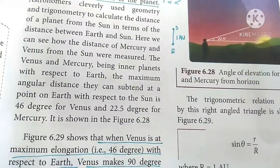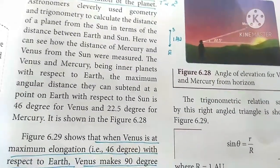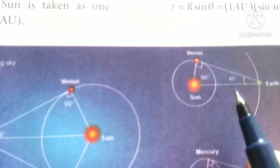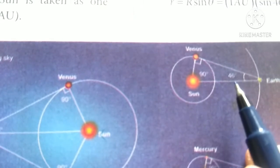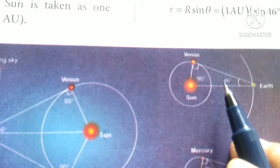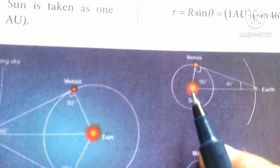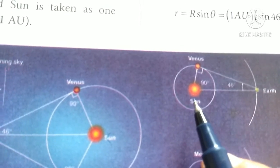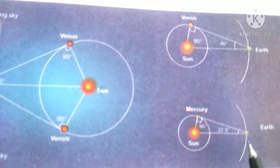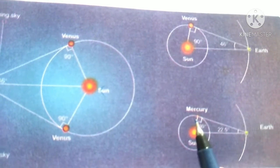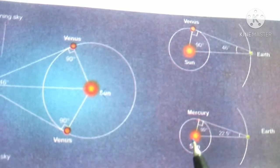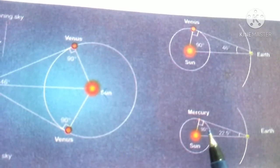When Venus is at maximum elongation, Venus and Mercury are at maximum angle, 90 degrees with the sun.